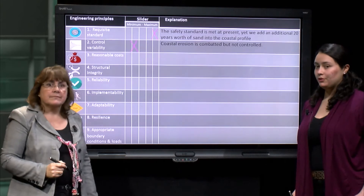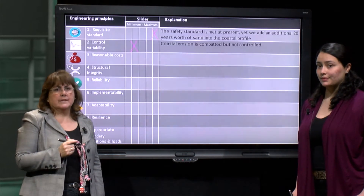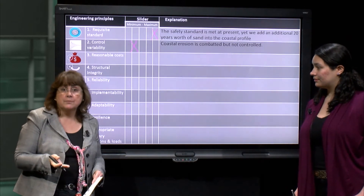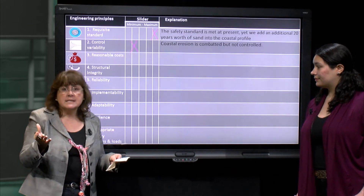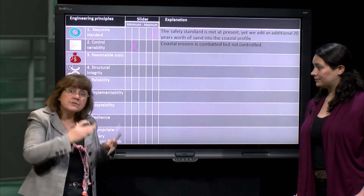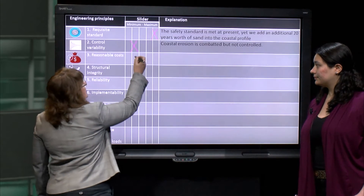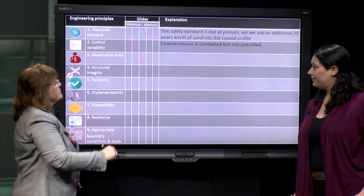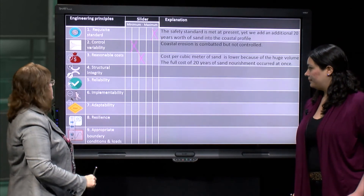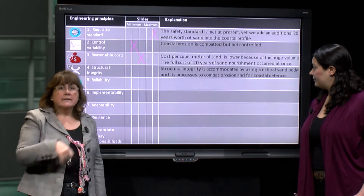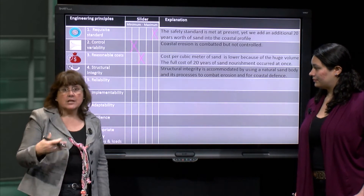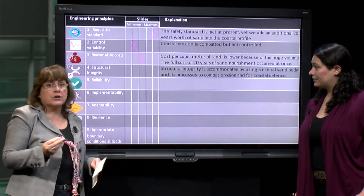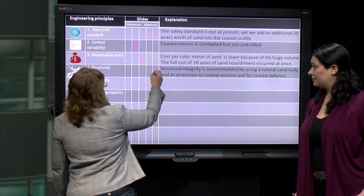Principle 3, reasonable costs: this is an interesting point. On the upside, the cost per cubic metre of sand is lower because of the huge volume. But on the downside, the full cost of 20 years of sand nourishment occurs all at once, so we score that relatively neutrally. Principle 4, structural integrity: the issue of structural integrity is accommodated by using a natural sand body and its processes to combat erosion and for coastal defence, so that scores quite highly.